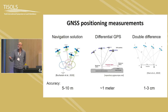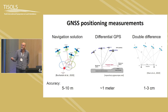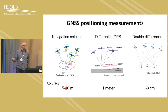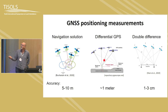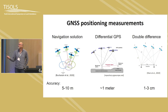GPS satellites orbit at about 20,000 kilometers above Earth's surface and provide signals for navigation. The basic navigation solution uses range from satellite to surface, triangulated to get accuracy of about 5 to 10 meters. Differential GPS with a reference correction station gets to about 1 meter. Double-difference processing removes much of the noise in range measurements and achieves about 1 to 3 centimeters accuracy.